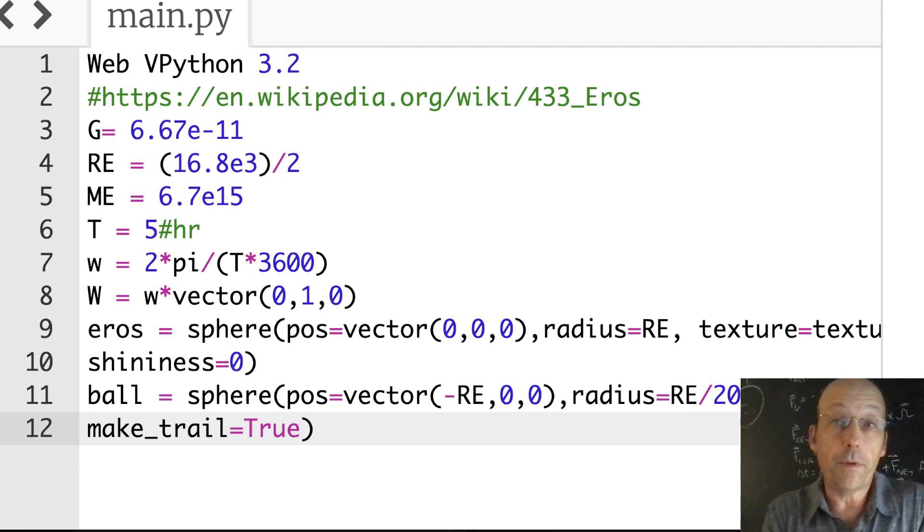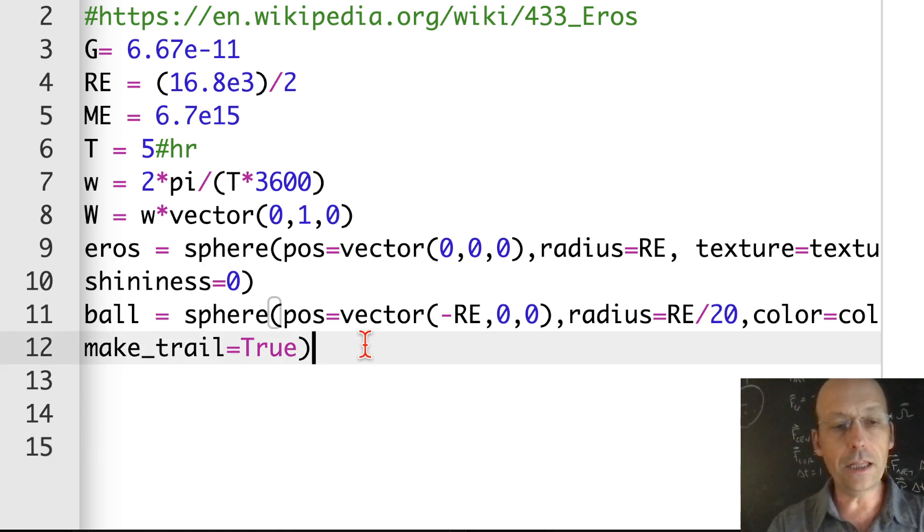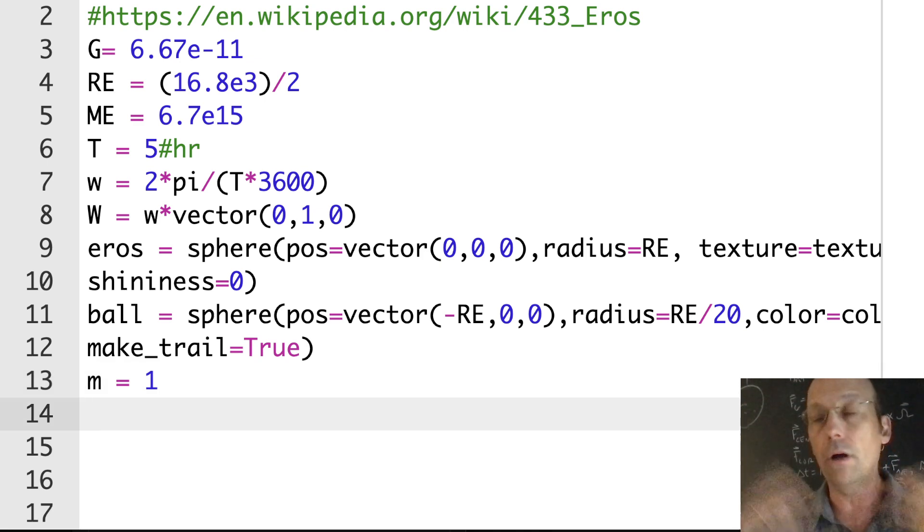It's a sphere. Position equals vector negative RE, zero, zero. And its radius is going to be RE over 20 because I want something visible. I don't want to have a real ball, you won't be able to see it. Color equals color dot yellow. And I need to put make trail equals true. Make trail makes it leave a trail, so that's going to be really useful.